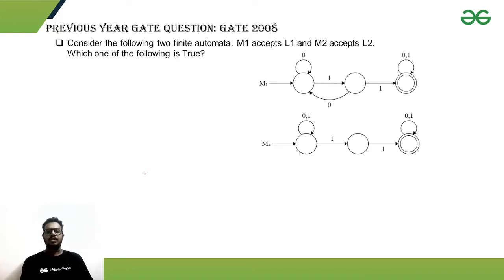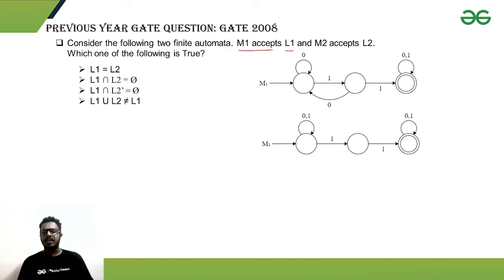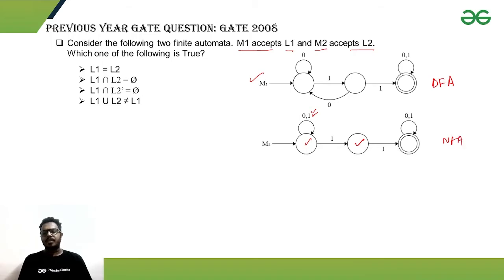Now the GATE 2008 question: consider two finite automata M1 accepting language L1 and M2 accepting language L2. In M1, all transition rules are defined for all inputs — it's a DFA. For M2, from the initial state on input '1' you can either stay in the initial state or go to a non-accepting state, so M2 is an NFA. The key point is that DFA and NFA have equivalent computational power and can recognize the same languages.